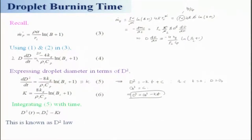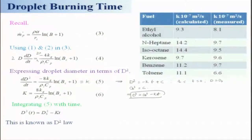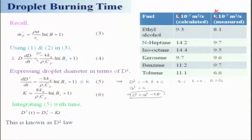People have conducted experiments and observed that most single fuel droplets under quiescent atmosphere follow this d² law roughly. Looking at the K values: calculated values from the simple analysis give 9.3, whereas experimental values come to 8.14 and 14.2 — not very far different, keeping in mind the simplicity of the analysis.